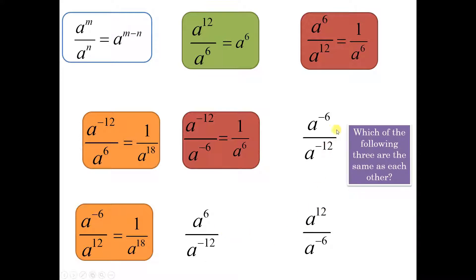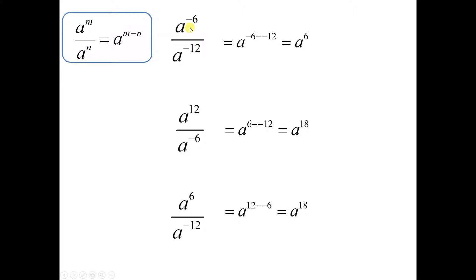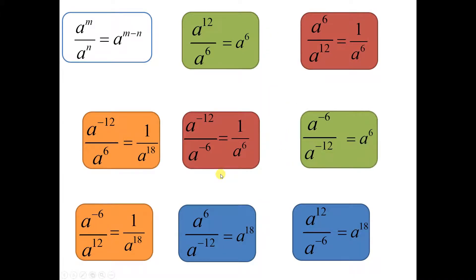Now we've got three left. Of the three, which two do you think are the same? Let's go ahead and take a look at all three at the same time. Expression 6 is a to the 6th because we have 12 on top and 6 on the bottom, and that reduces to a to the 6th. Expressions 7 and 8 are actually the same — both equal a to the 18th. So when we first started this, there were actually four pairs of equivalent expressions. Just the way their exponents were written with negative signs made them not look the same, but they are.